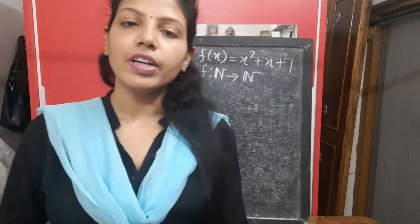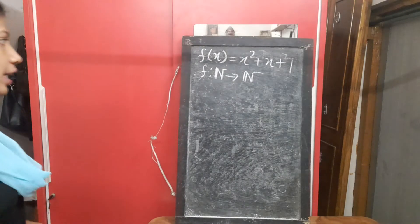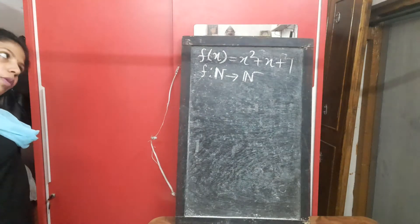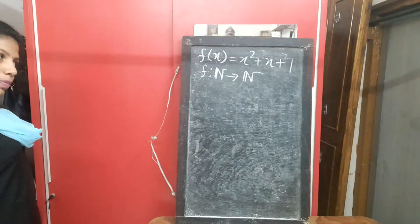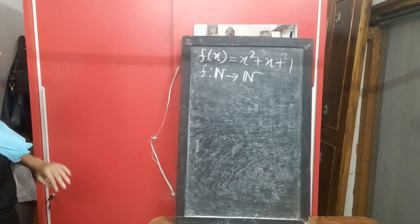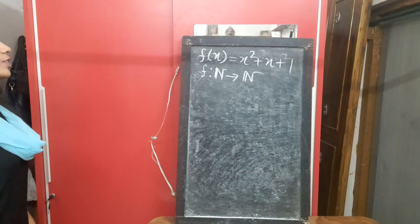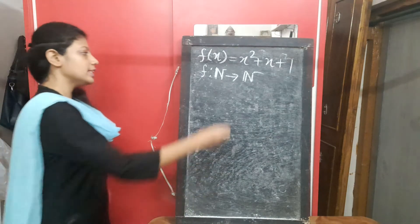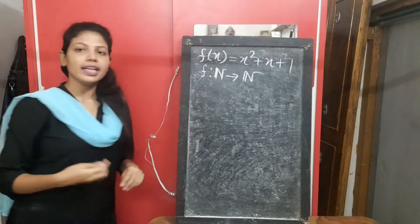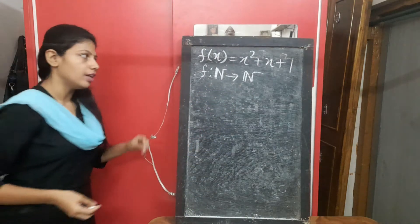Hello class 12, here I will give you more examples on 1-1 functions. Next example: f(x) = x² + x + 1, mapping from ℕ to ℕ. So here the domain is natural numbers and the co-domain is also natural numbers.